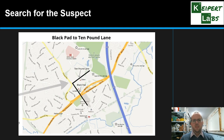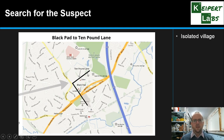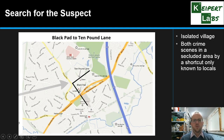Here is a map showing the area where the victims were found in Narborough, which is a very isolated village. This black line here is a path called Ten Pound Lane, and this path here is called the Black Pad — nicknames for this quite secluded area. This was a shortcut used only really by locals and known by locals.